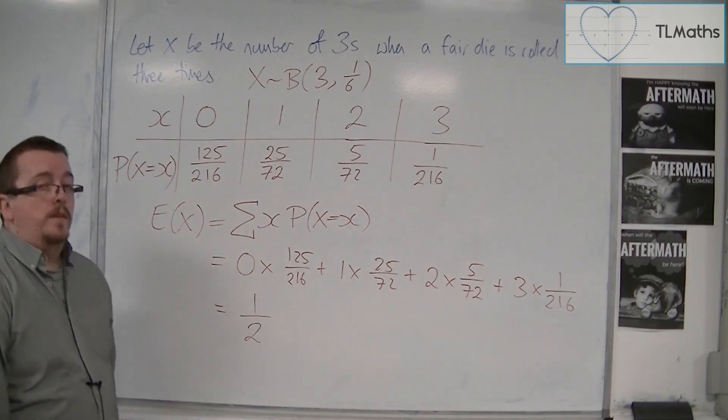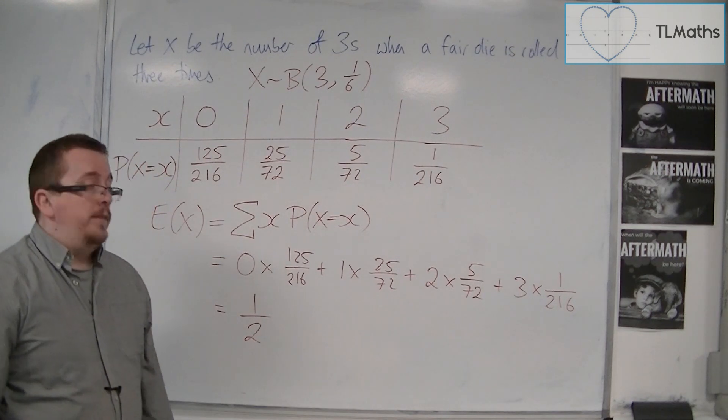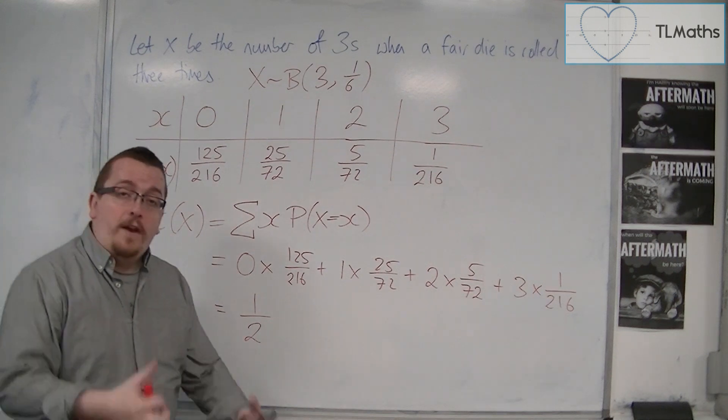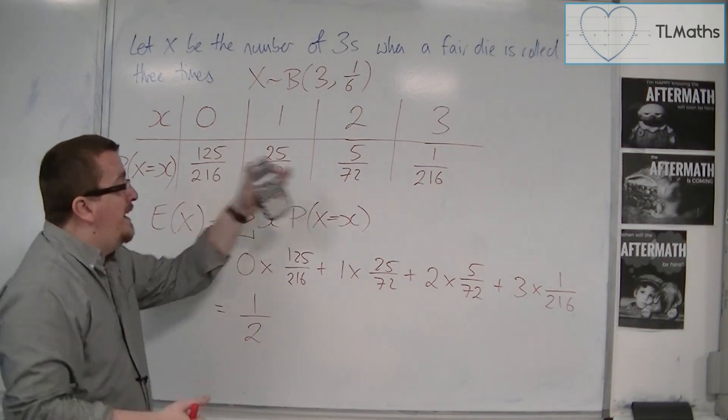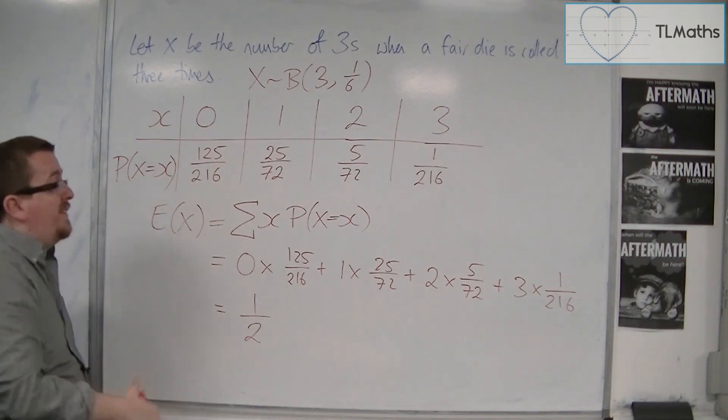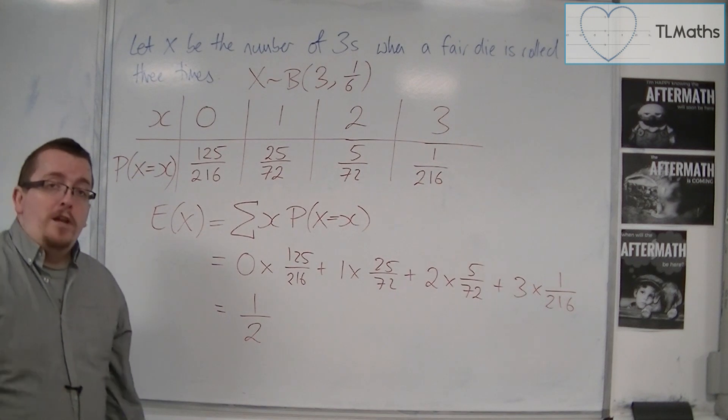So that is actually my expected value in this case. Now, this seems like a very long-winded approach. I had to first of all draw out a table with each of the probabilities, work each of the probabilities out. Then I had to multiply each of the x's by their probabilities and add them all together, and that gets me my answer. This is a very long-winded approach.